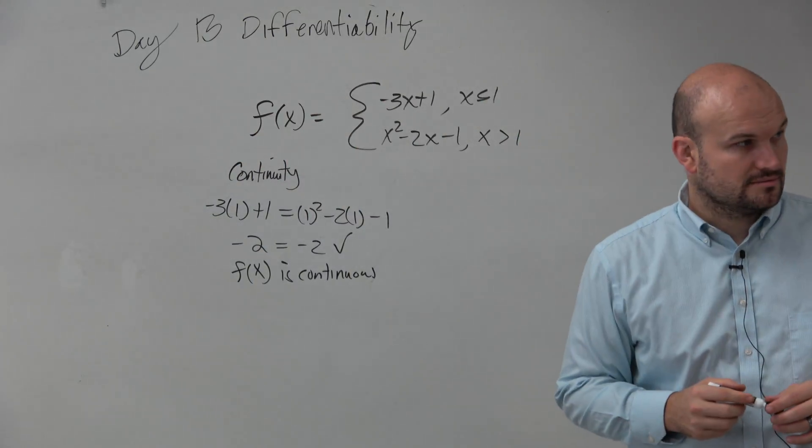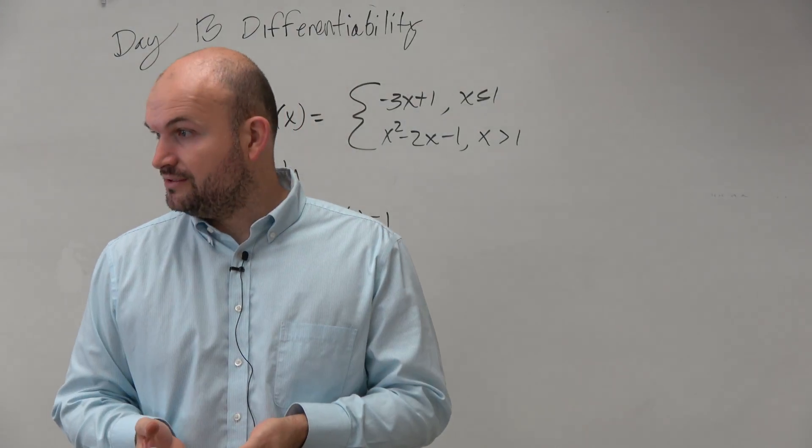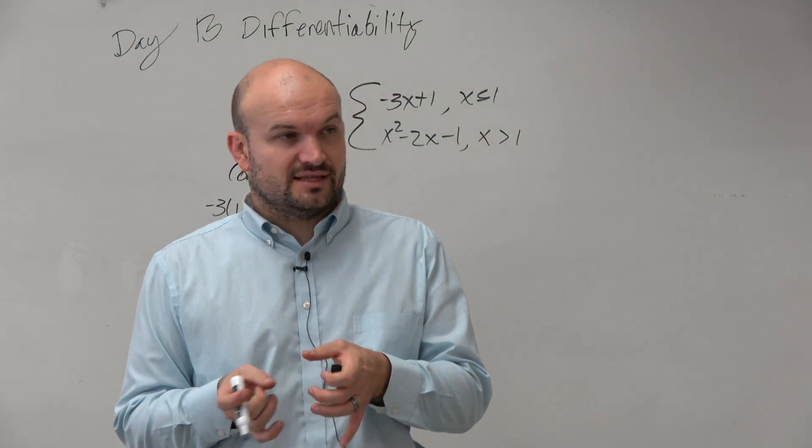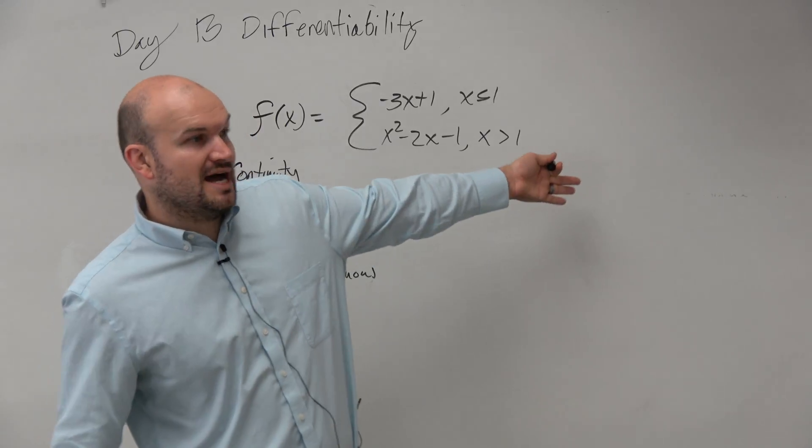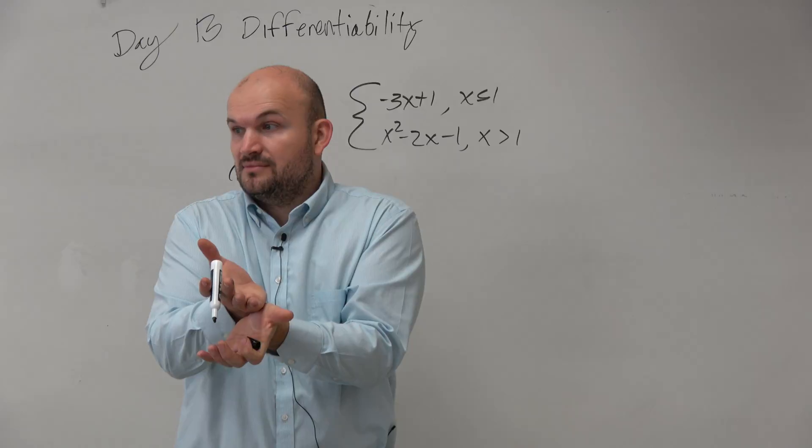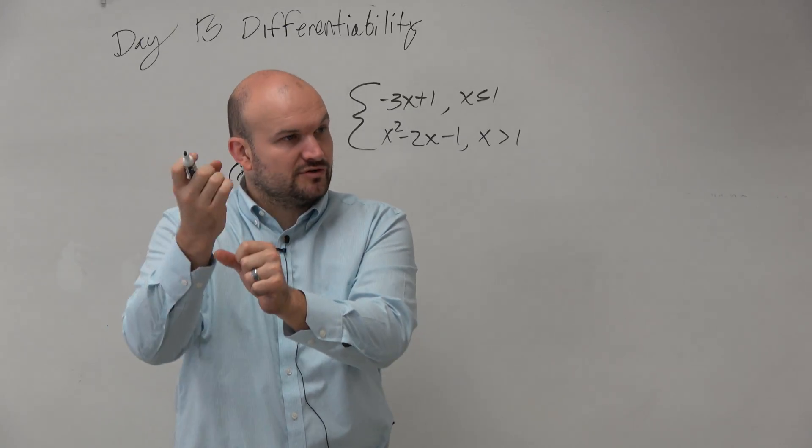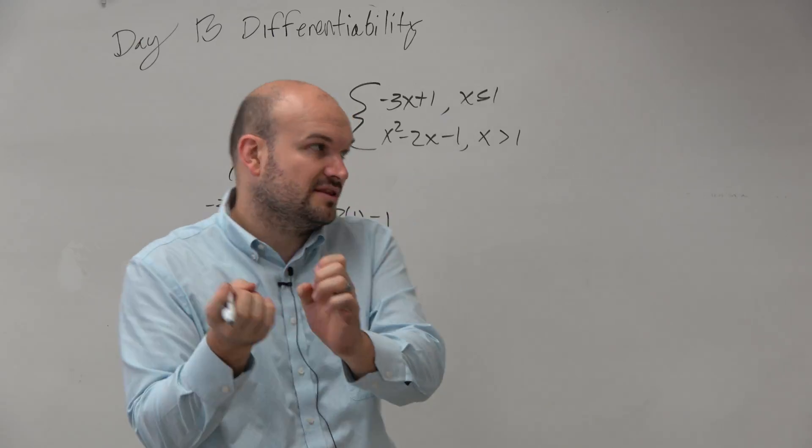Make sense? Continuous, that's good. Now we need to check differentiability. So to make sure that this is differentiable, the derivative on the left and the right have to be the same. You can't have two different derivatives—then it's not differentiable. You have to have the derivative be equal on the left and right-hand side.